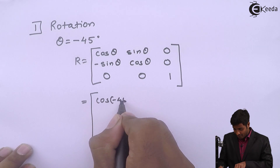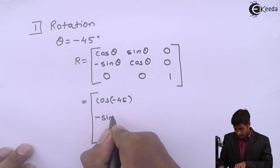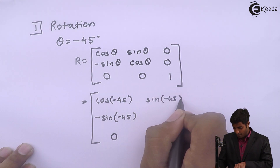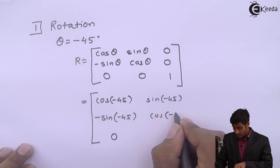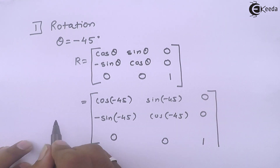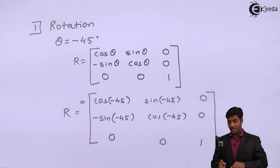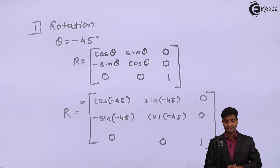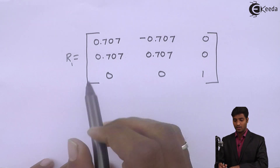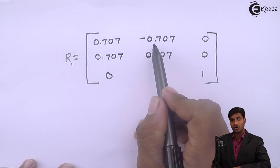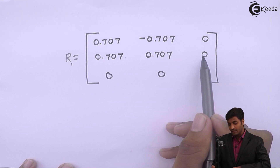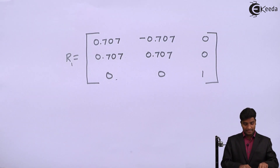After computing cos(−45) and sin(−45), the rotation matrix values come out as 0.707, 0.707, 0; minus 0.707, 0.707, 0; 0, 0, 1. This is the matrix for rotation.